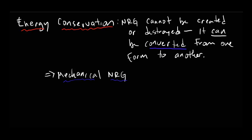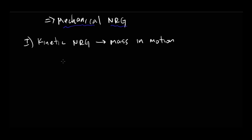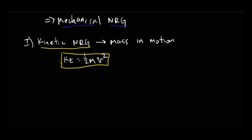If you're thinking about mechanical energy, there are really two different kinds. The first we've already talked about — that's kinetic energy. This is the result of a moving mass, a mass in motion. Kinetic energy is equal to one-half the mass of the object times its velocity squared. That's our equation for kinetic energy.